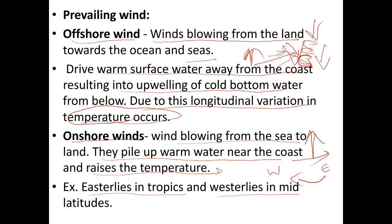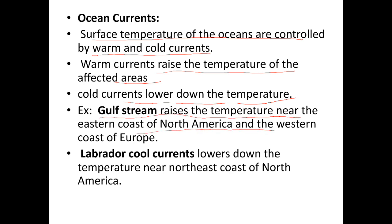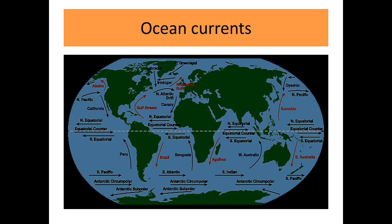Ocean currents: the surface temperature of the oceans is controlled by warm and cold currents. Warm currents raise the temperature of the affected areas, whereas cold currents lower the temperature. For example, the Gulf Stream raises the temperature near the eastern coast of North America and western coast of Europe, while the Labrador cold current lowers the temperature near the northeast coast of North America.